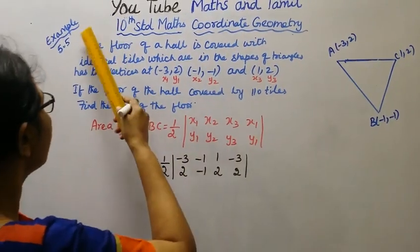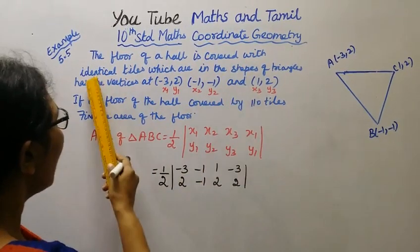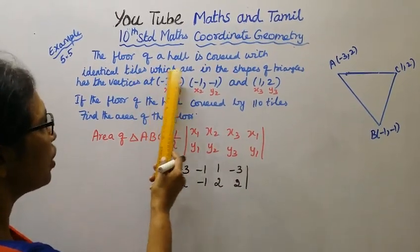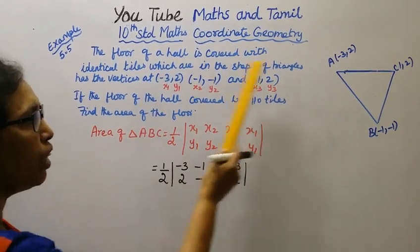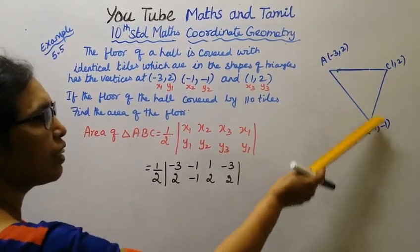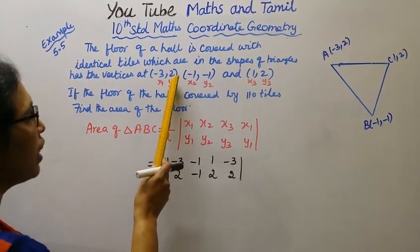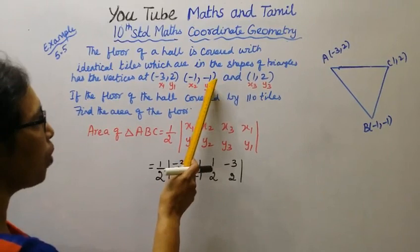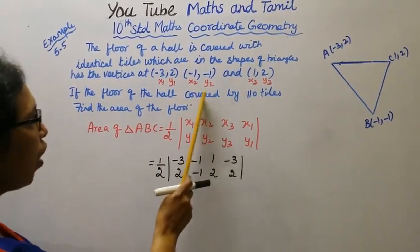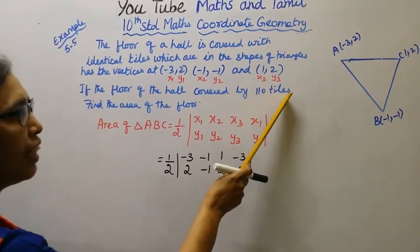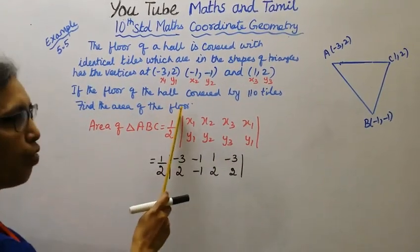10th Standard, Max Coordinate Geometry, Example 5.5. The floor of a hall is covered with identical tiles which are in the shape of triangles, with vertices at minus 3,2 and minus 1, minus 1 and 1,2. If the floor of the hall is covered by 110 tiles, find the area of the floor.